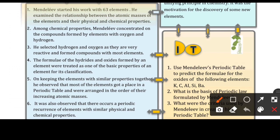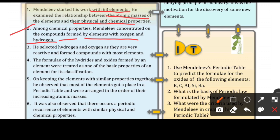When Mendeleev made his table, he had 63 elements. He examined their atomic masses and their physical and chemical properties. Among the chemical properties, Mendeleev concentrated on the compounds formed by the elements with hydrogen and oxygen, because hydrogen and oxygen are very reactive.